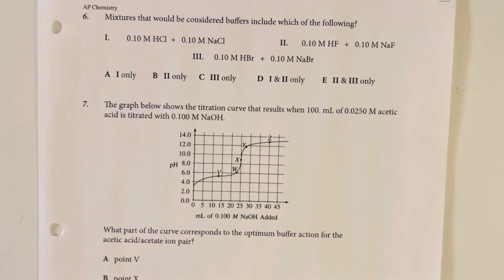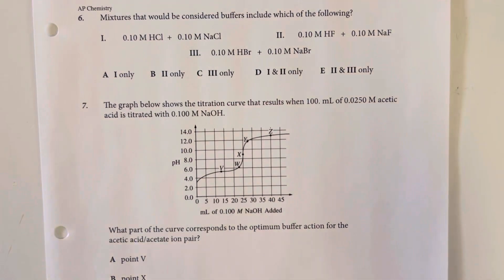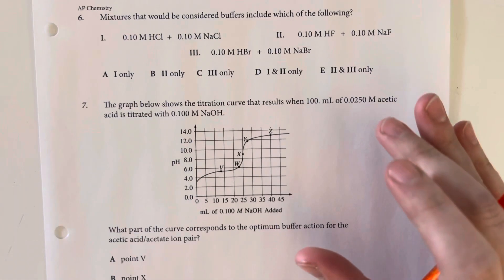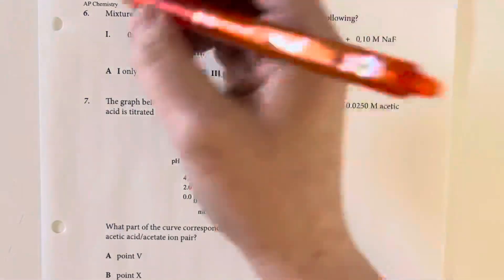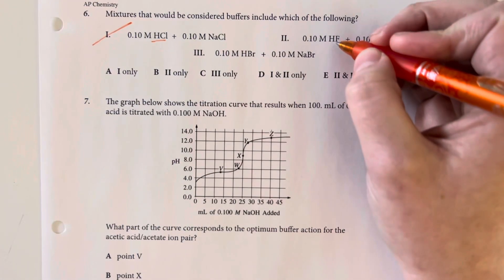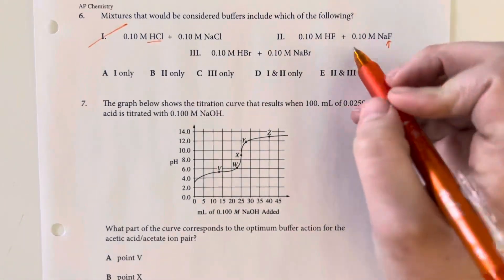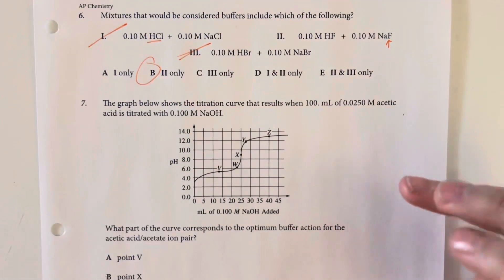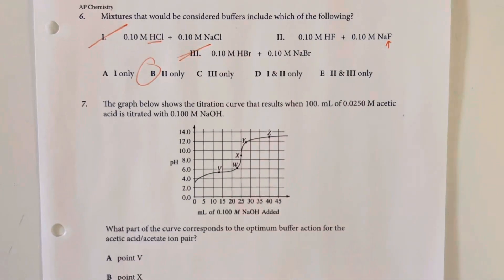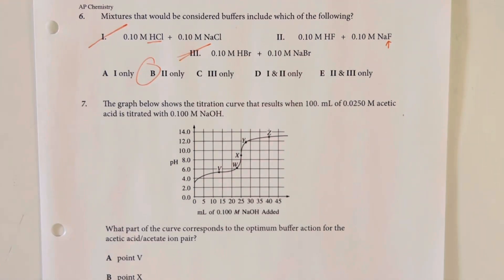Mixtures that would be considered buffers include which of the following? Buffers are a weak acid and a base that would produce the ion from the acid. Hydrochloric acid is a strong acid, so that's not an option. Hydrofluoric acid is a weak acid, and sodium fluoride produces the conjugate base ion, so that's good. Hydrobromic acid is also a strong acid, so only option two would produce a buffer, since only option two meets the criteria of a weak acid and its conjugate base ion provided by a salt.